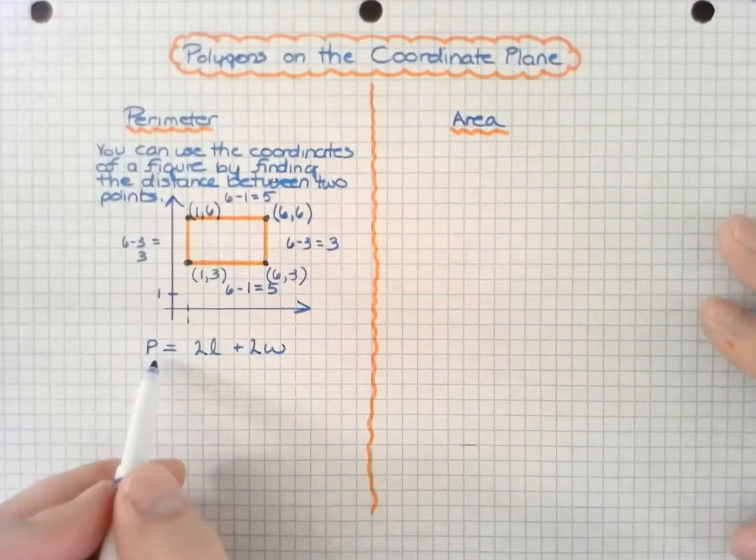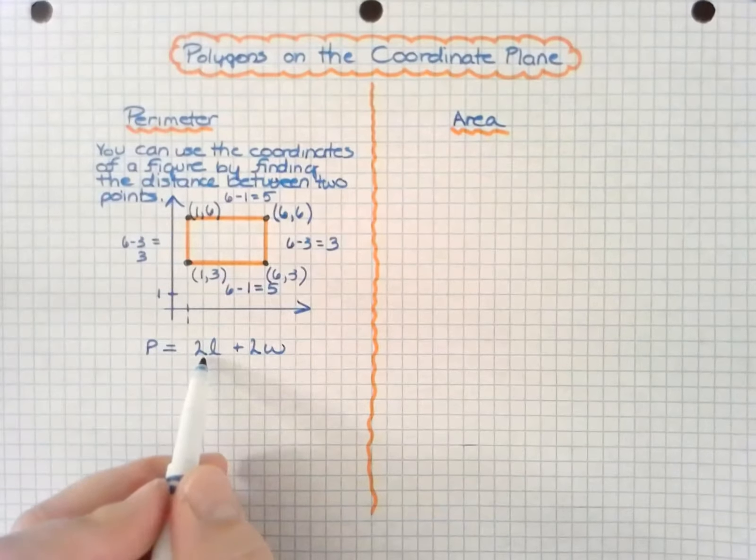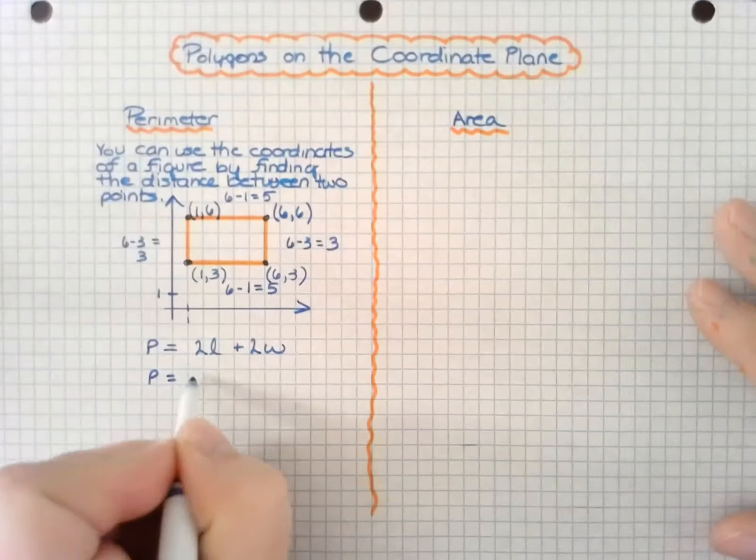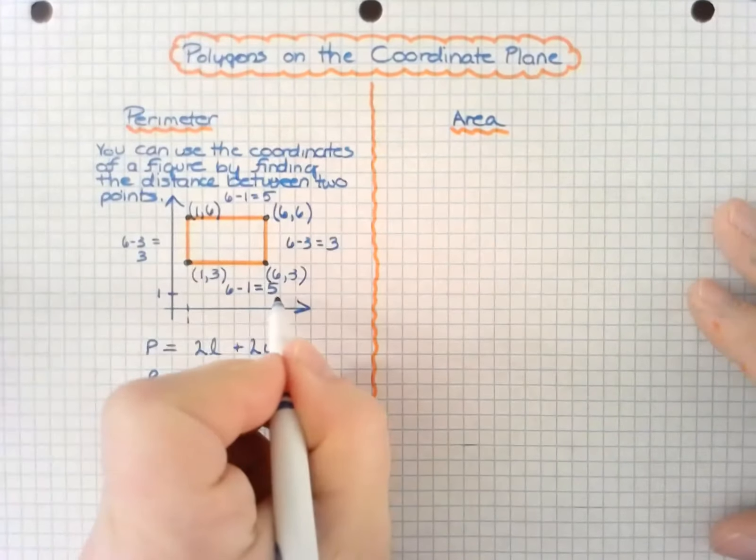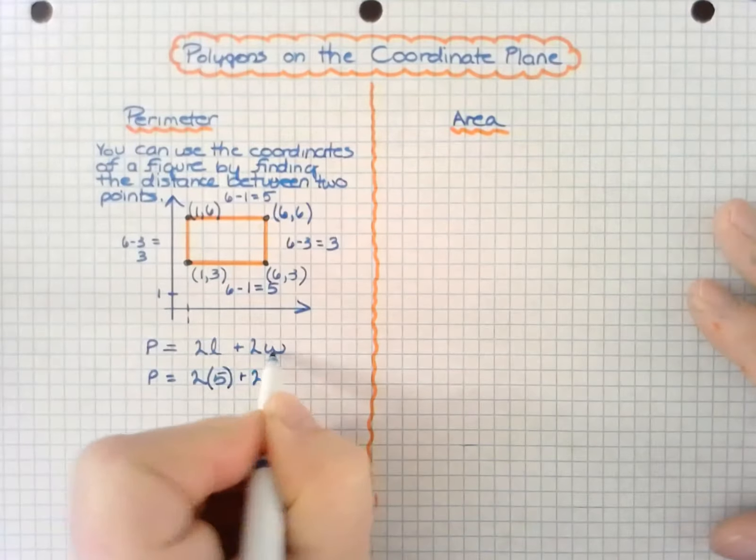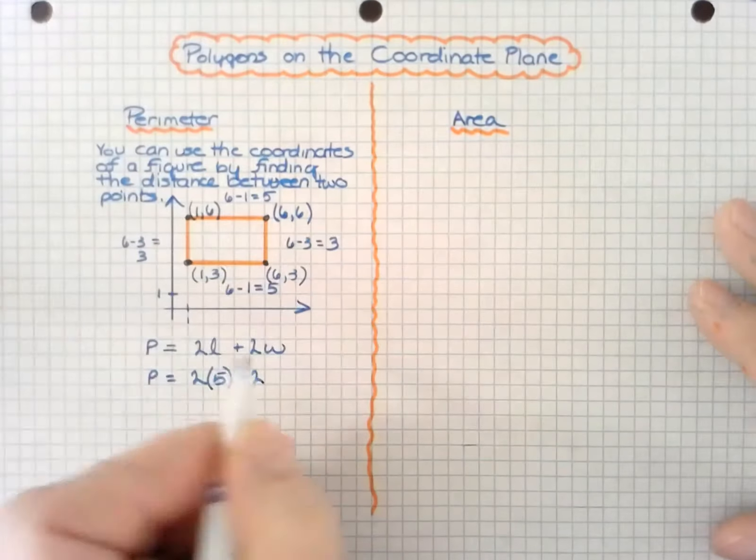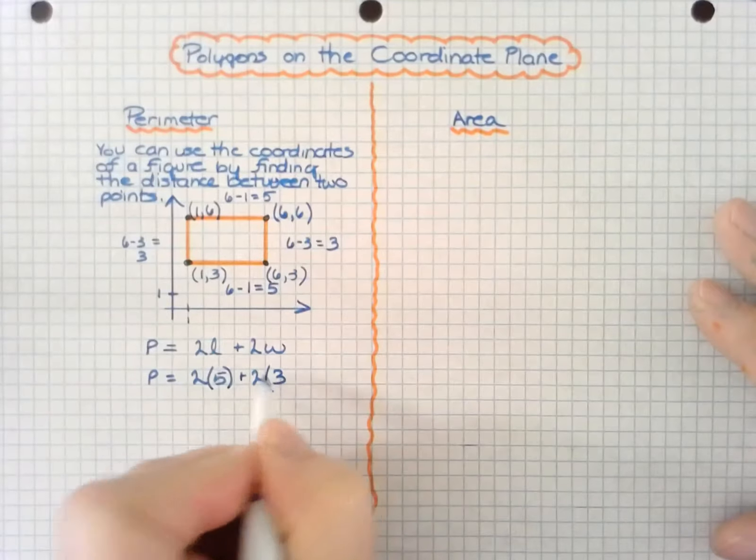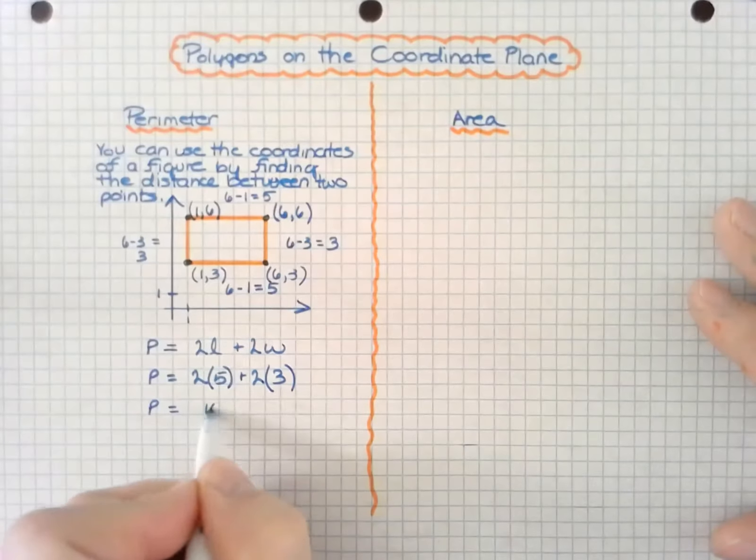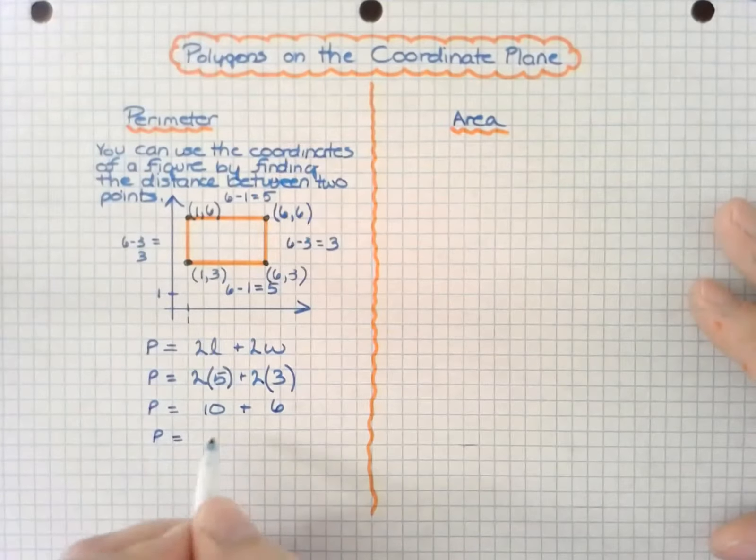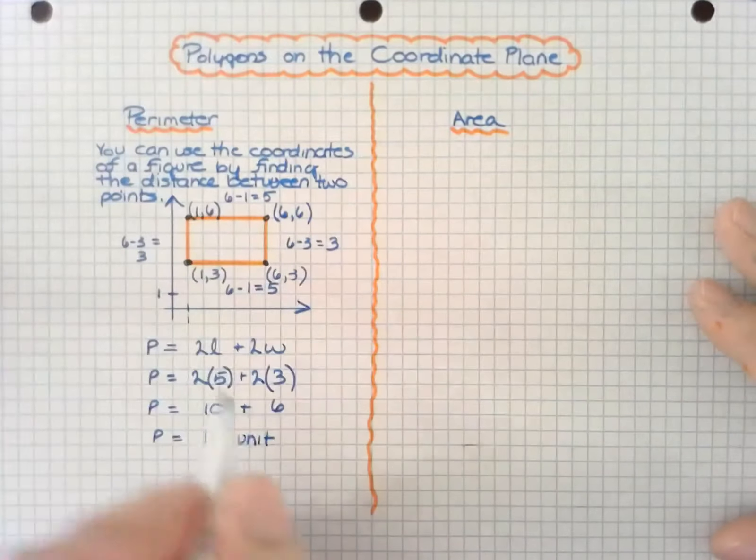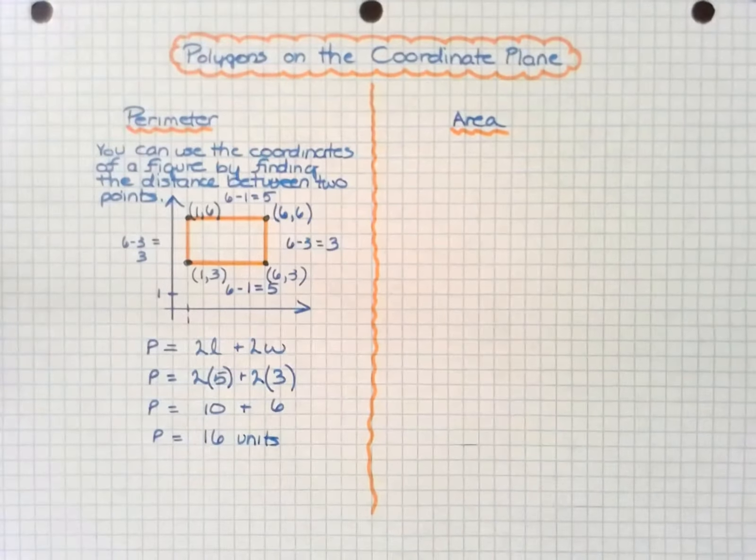So I know the perimeter formula for a rectangle is 2 times the length plus 2 times the width. If I plug in my values, I have 2 times 5 for the length - they're both 5, that's why there's 2 of them - and then 2 times 3 for the width, and there's 2 of those sides. If I simplify all this, I get 10 plus 6, which equals 16 units. It's one-dimensional because I'm just doing the edge.